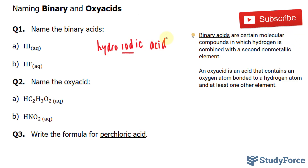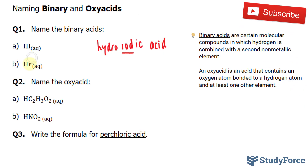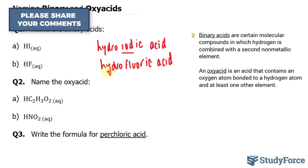Let's use the same pattern for question B. They want us to name HF — hydrogen and fluorine. Once again, we'll start with hydro, then fluor, which is the base of fluorine, followed by IC and acid, pronounced hydrofluoric acid.